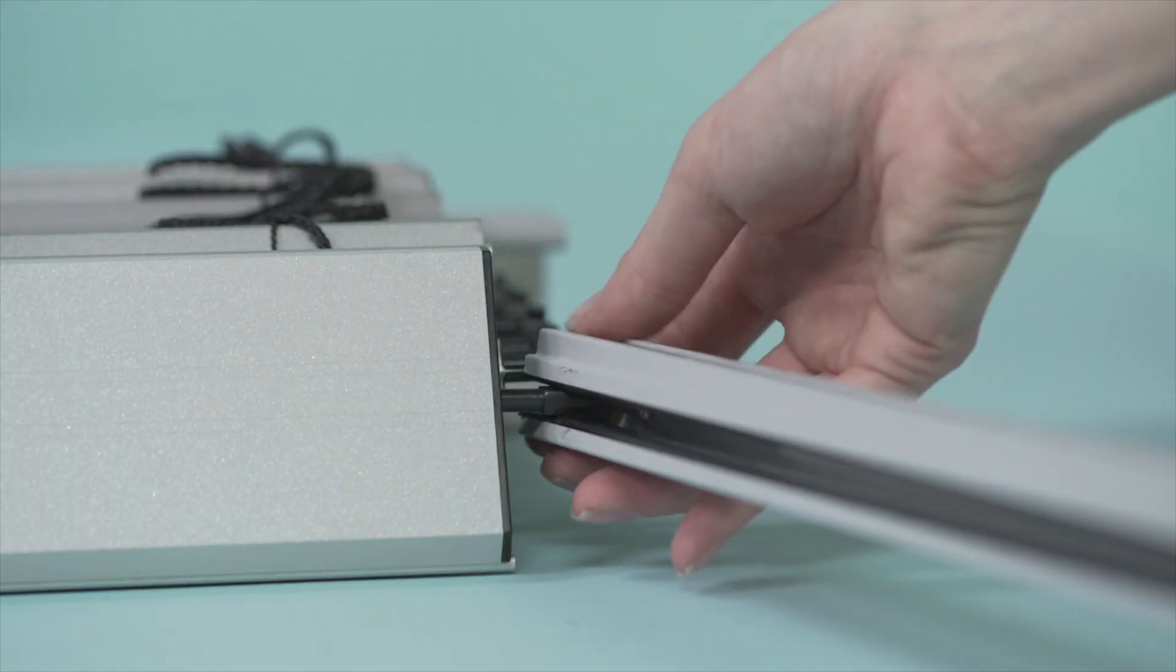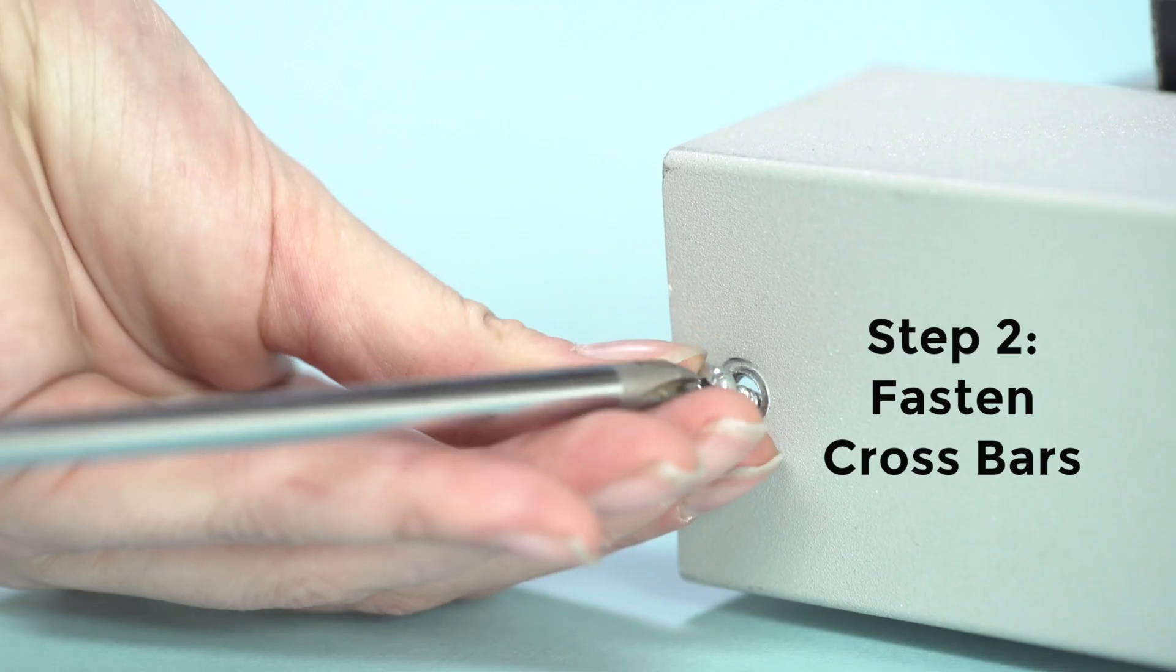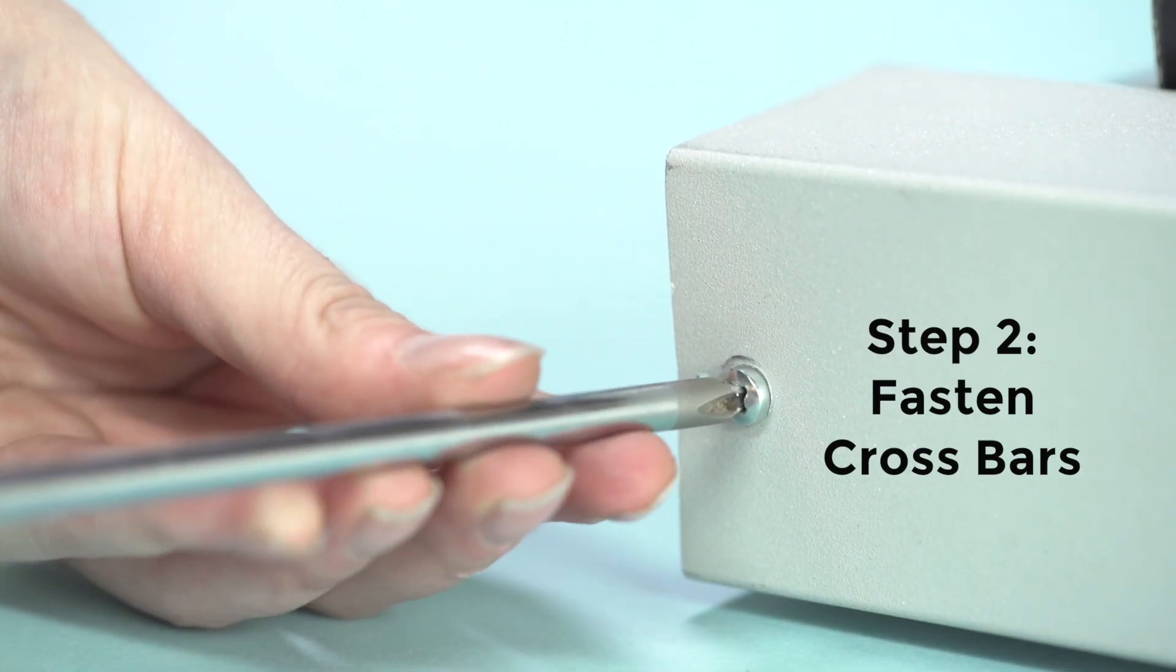Next, slide the crossbars into alignment on either side of the SolarGaps blinds. At the top, tighten the screw that fastens the crossbars.